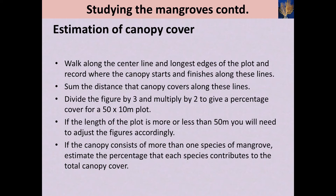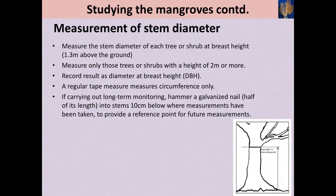If the canopy consists of more than one species of mangrove, estimate the percentage that each species contributes to the total canopy. When measuring the stem diameter, you should measure the stem diameter of each tree or shrub at breast height, which is usually 1.3 meters above the ground. You should take trees or shrubs with a height of 2 meters or more. These results are recorded as diameter at breast height (DBH). If you carry out long-term monitoring, hammer a galvanized nail into the stem 10 centimeters below where measurements have been taken, to provide a reference point for future measurements.